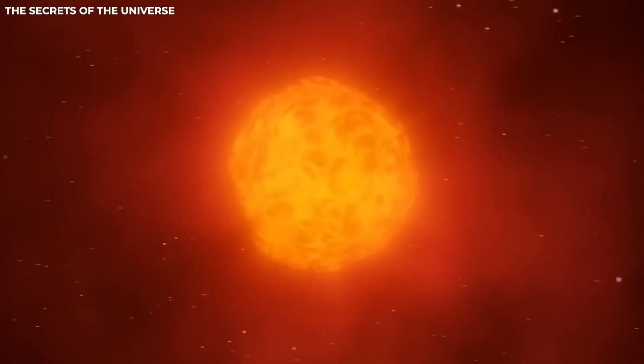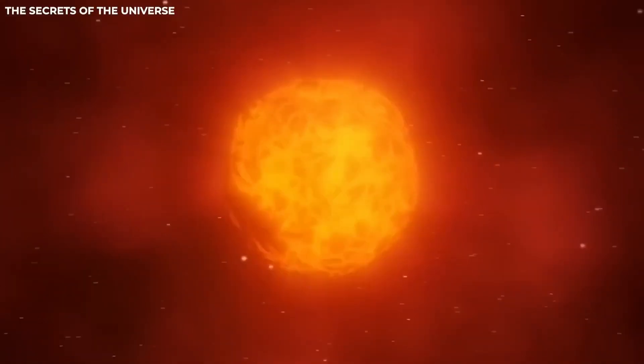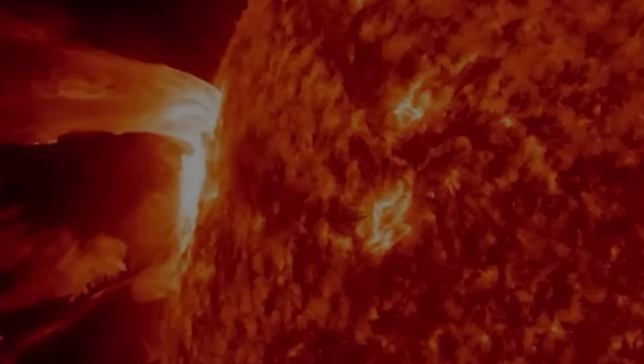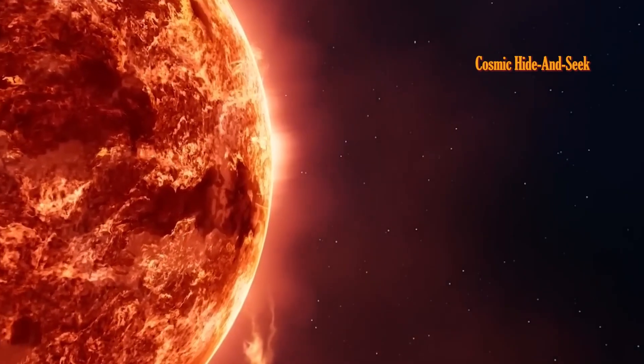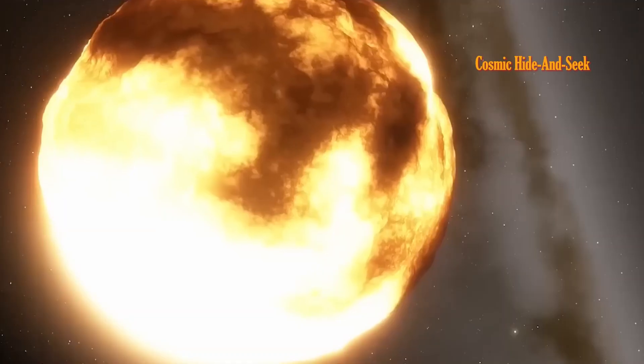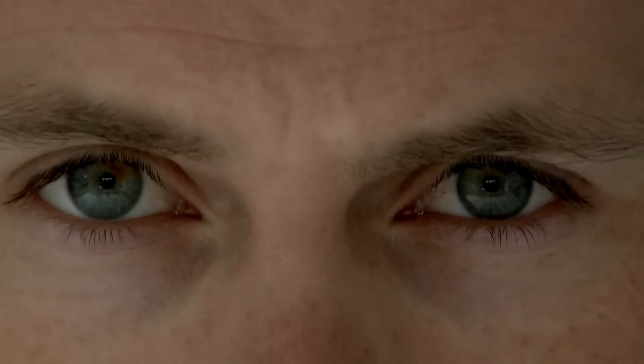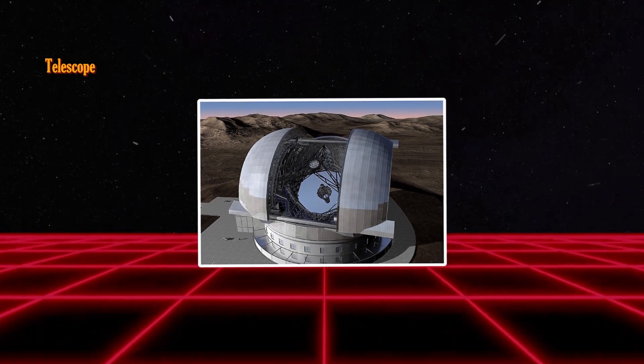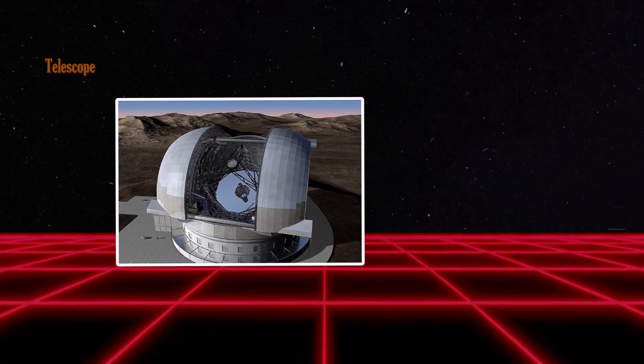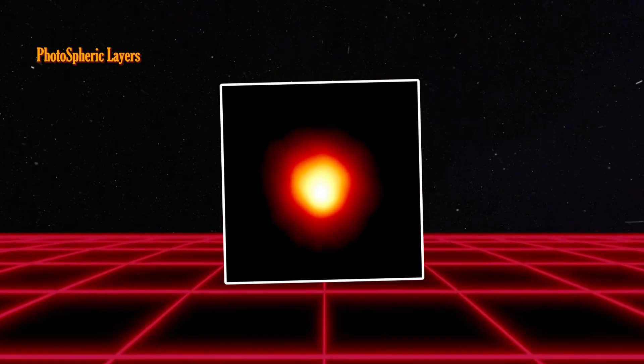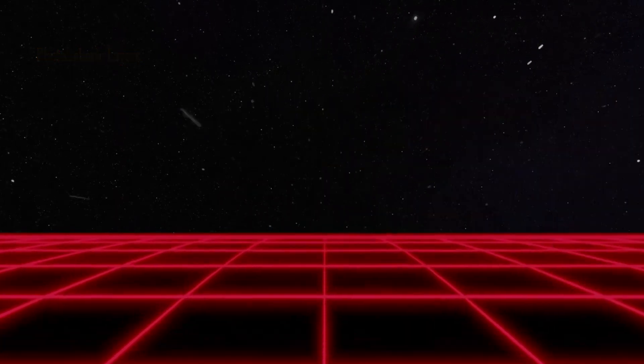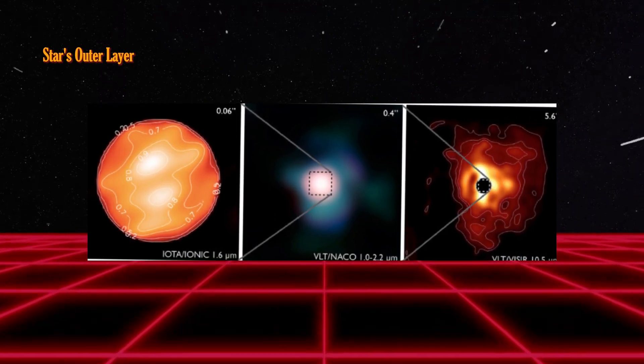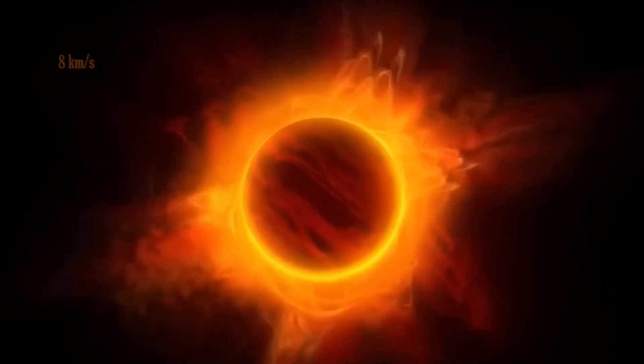To truly grasp the cosmic enigma that is Betelgeuse, let's rewind to 2019 when this star started pulling off some celestial tricks. Picture Betelgeuse playing cosmic hide-and-seek as it dimmed significantly, catching the naked eye's attention. Telescopes, especially the very large telescope, caught Betelgeuse in the act. Symmetrical, but with a turbulent twist in its photospheric layers. The star's outer layer, the photosphere, decided to swell up like a cosmic balloon, expanding at a steady 8 km per second.